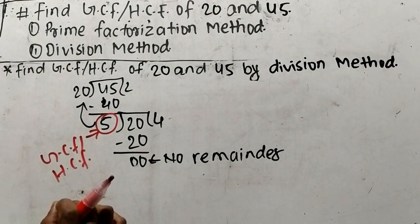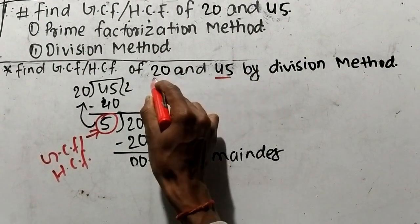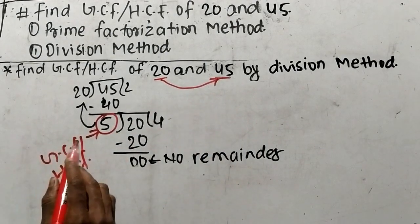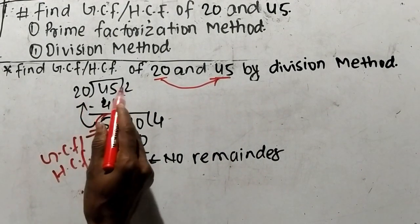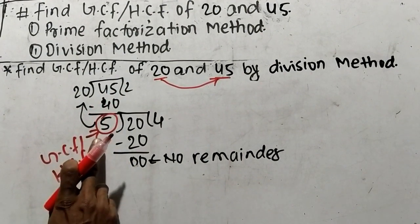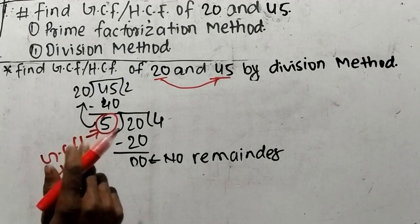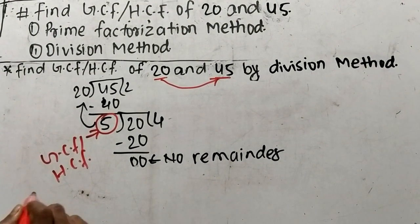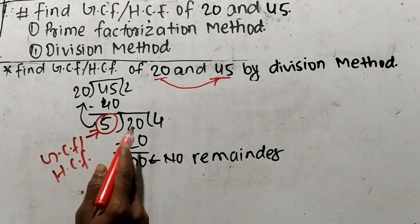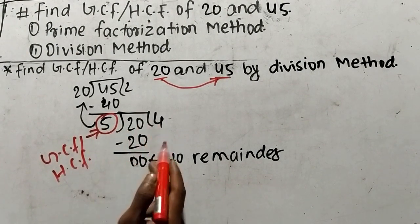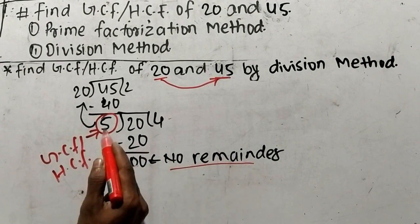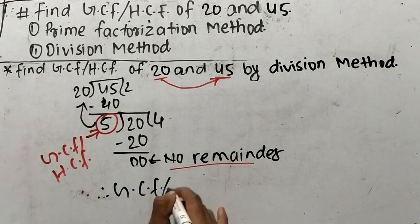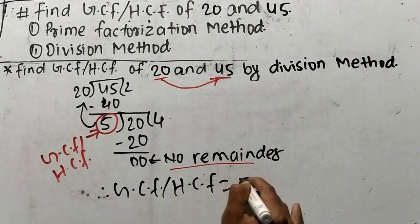While finding out GCF or HCF by division method, first we find the greater and lesser number and divide the greater number with the lesser number. So dividing 45 by 20: 20 times 2 is 40, and 5 comes as remainder. When 5 comes as remainder, we divide the divisor again with the remainder, and keep dividing until there is no remainder. While dividing the divisor 20 with 5, we get no remainder, so 5 becomes the GCF or HCF. Therefore, GCF or HCF is equal to 5.